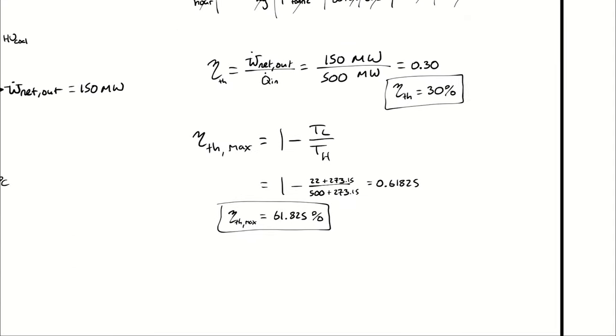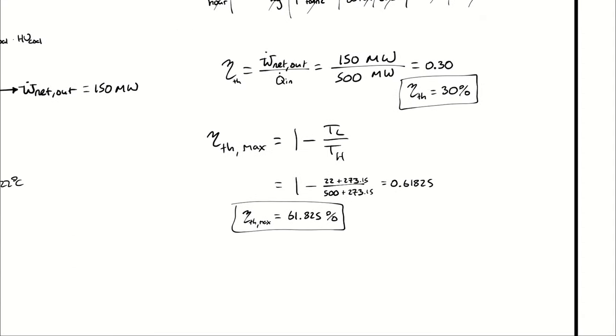So we determine that operating between these two temperatures, we theoretically could, if everything were perfect and there were no losses, have a thermal efficiency of 61.825%.